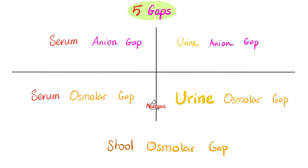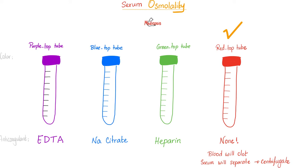There are five gaps you need to know about: serum anion gap, serum osmolar gap, urine anion gap, urine osmolar gap, and stool osmolar gap. We talked about serum osmolality before, so let's review.